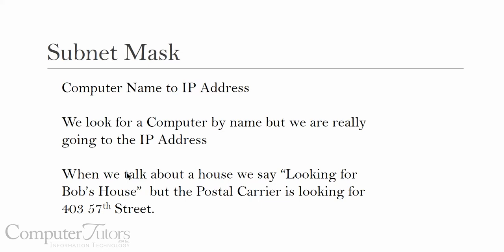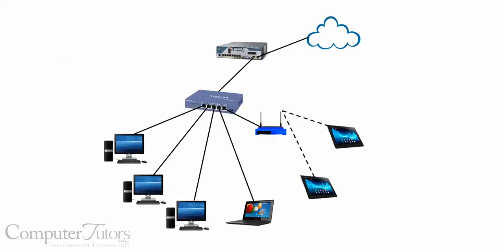So if we were saying we're looking for Bob's house, a postal carrier probably doesn't know where Bob's house is — they're looking at the street address, like 4035 7th Street. Now let's look at a picture of some computers and talk about them. Here's three desktops, a laptop, two tablets, and I'm also describing the Internet here. Each of these six computers will have unique IP addresses to identify how to get to them.